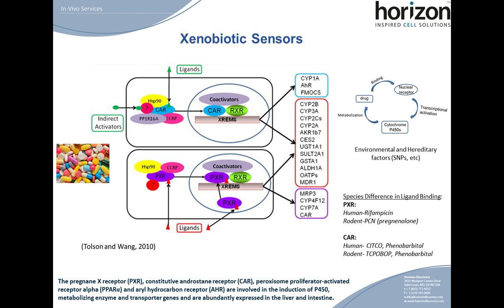In this process of drug introduction, binding, activation, and metabolism is a continual process, and can have an impact on how prescription drugs function within the body. Environmental or hereditary factors can also impact how these receptors function and the genes they regulate. Since we are talking about rodent models, there are species differences in terms of ligand binding. The human PXR has a preference for rifampicin, and the rodent PXR for PCN. For CAR, there are differences in CITCO versus TCPOBOP binding, but both have an affinity for phenobarbital. Regardless of their differences in ligand binding, the regulation of these genes is quite conserved across species.